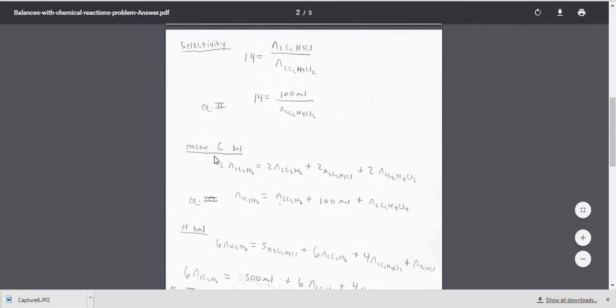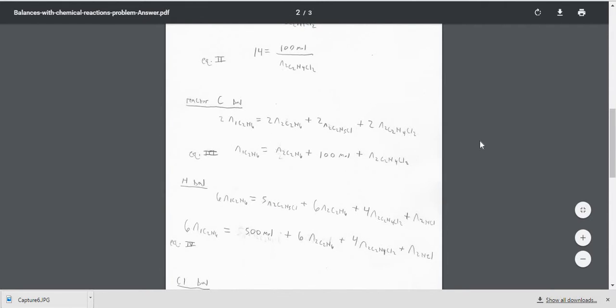Now let's do a reactor balance on carbon. So we know for every C2H6 moles coming in, so every mole of ethane coming in, there's two carbons, so that's why we have the two out front. And that's going to be equal to two times all the ethane coming out, because once again there's two carbons, two times the amount of C2H5Cl coming out because that's the amount of carbons, and again two times the amount of C2H4Cl2 coming out. All those twos can actually cancel, and we can replace what we know for the amount of moles of N2C2H5Cl to get equation three, which is right here.